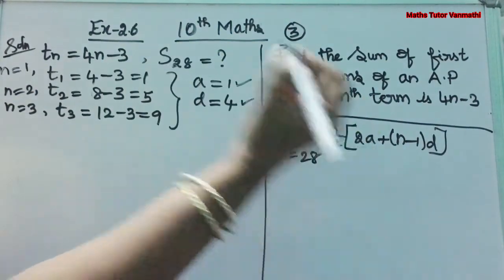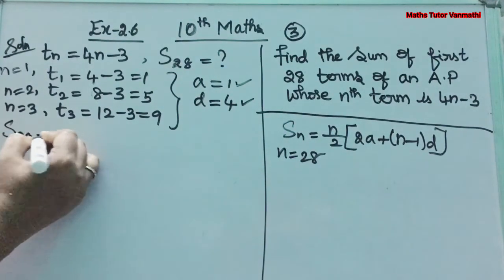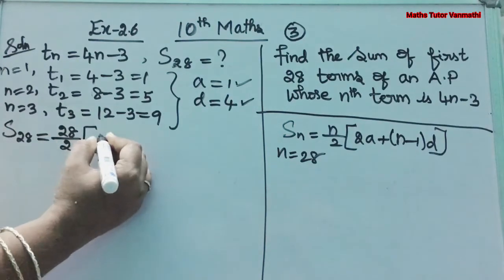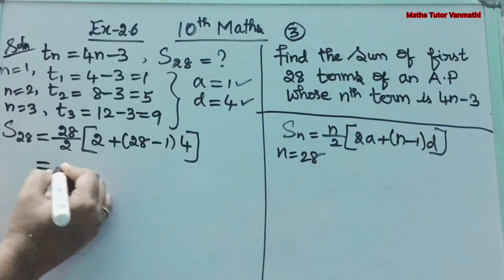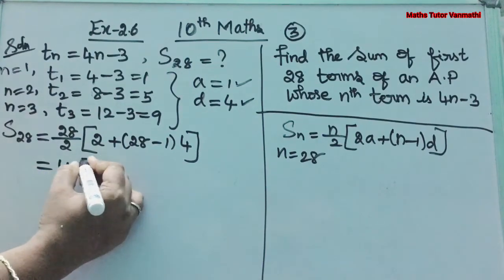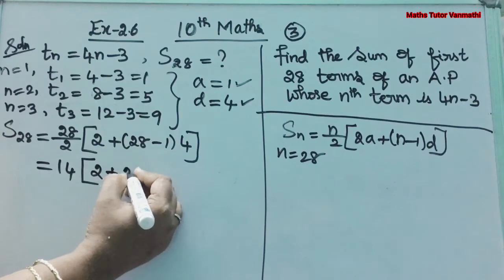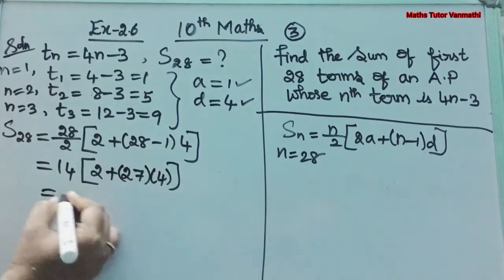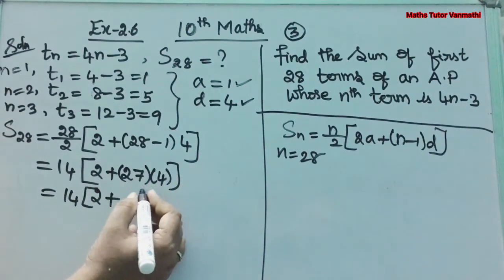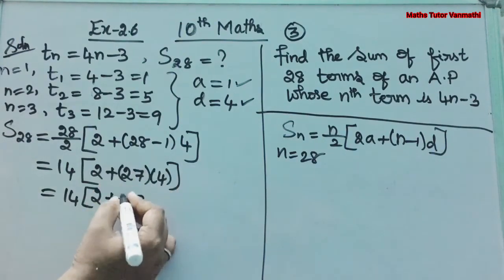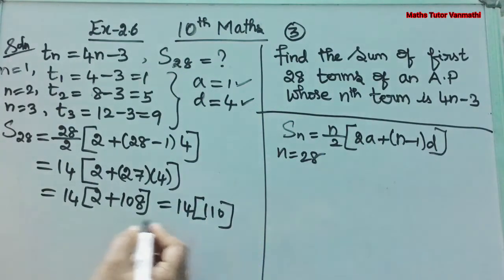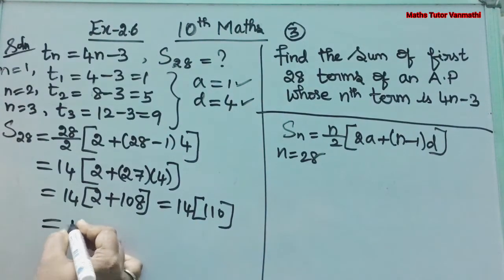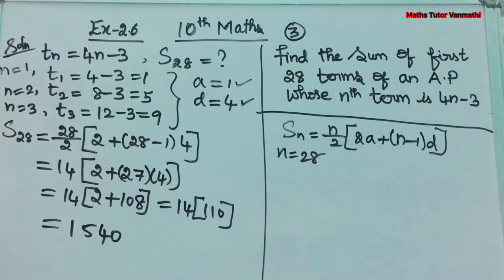For S28, substitute N = 28, A = 1, D = 4: S28 = 28/2 × (2×1 + (28−1)×4) = 14 × (2 + 27×4) = 14 × (2 + 108) = 14 × 110. On multiplying you get 1540. So S28 = 1540.